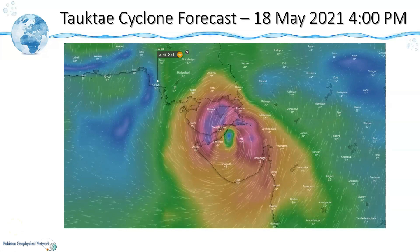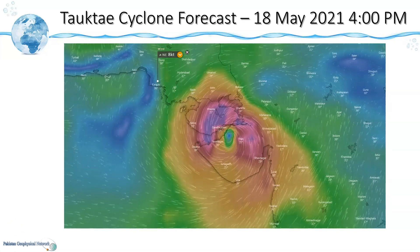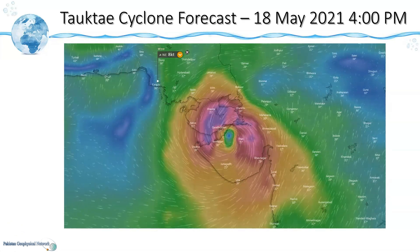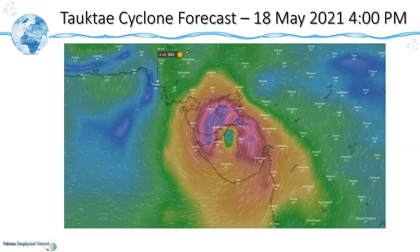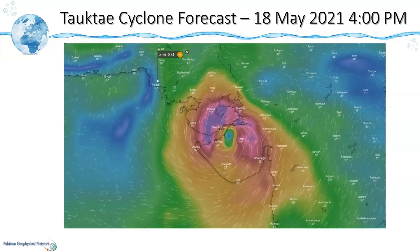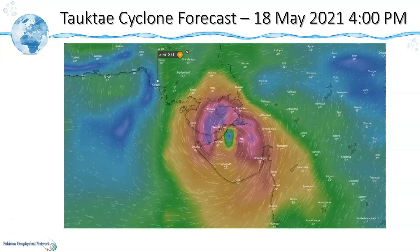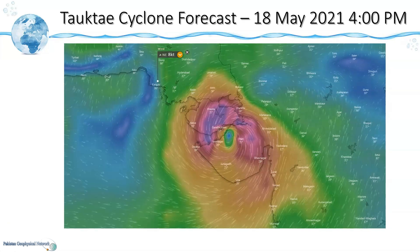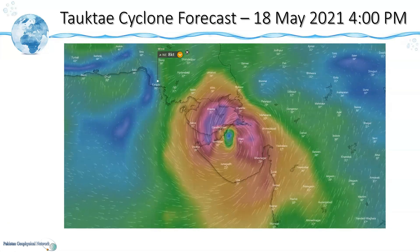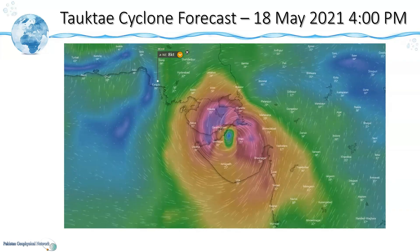It is important to note that the cyclone wind speed is greater than 40 knots, but as it enters over the Indian state of Gujarat, the wind speed will reduce to below 40 knots. There will be winds and rain, but we hope that everything will be within safer limits.